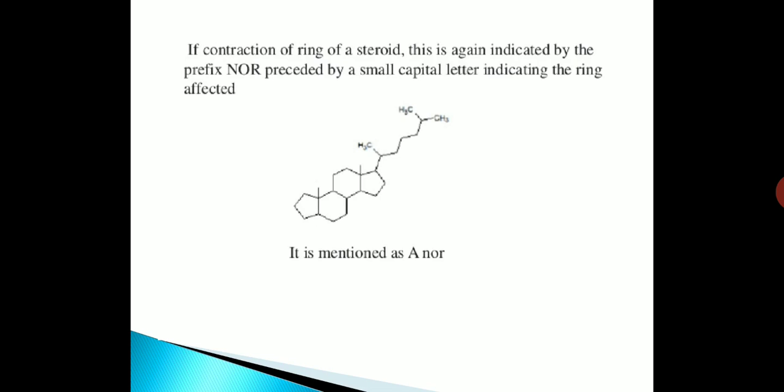If there is a contraction of a ring in a steroid, this is again indicated by the prefix 'nor', preceded by a small capital letter indicating the ring affected.